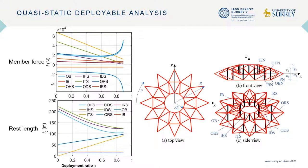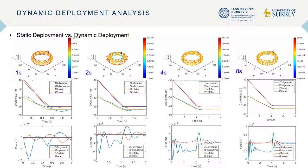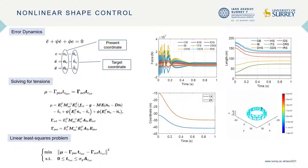We also perform quasi-static deployment analysis to get the member forces along the deployment path. We compare the static and dynamic deployment: for fast deployment, the dynamic process cannot be neglected, while for relatively slower deployment, the static and dynamic results are nearly the same. We also implemented a linear feedback control law to drive the velocity of the nodes to zero, and you can see from the plot that the nodes are smoothly controlled to their final target.